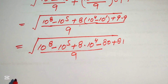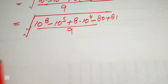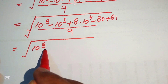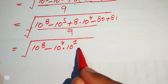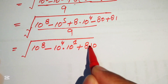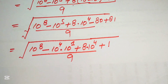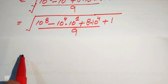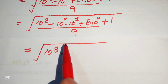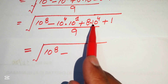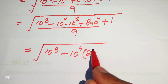Now we have a square root of ten raised to power eight minus — we write ten raised to power five as ten raised to power four into ten raised to power one — plus eight times ten raised to power four, minus eighty, plus eighty-one equals plus one, all divided by nine. We add or subtract like terms: ten raised to power four and eight minus ten raised to power four, which gives ten minus ten plus eight equals ten raised to power four into two, plus one, divided by nine.